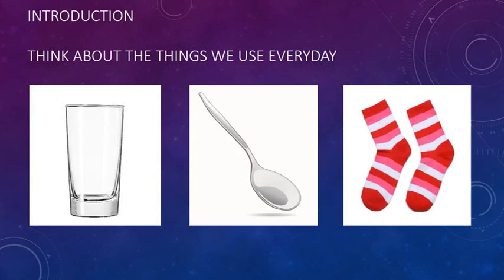You can see the glass, the metal spoon, and the woolly socks. Let's think about the materials used to make these objects. All three items are non-living things, but when you look at the socks, what material is used in making them? We use wool, and we get wool from the sheep. So this material was formerly living but has now become a non-living thing.